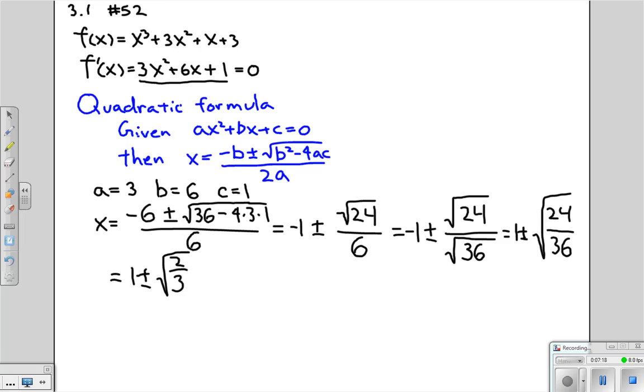The two values of x for which f prime of x is 0 then, is x equals negative 1 plus square root of 2 thirds, and x equals negative 1 minus square root of 2 thirds.